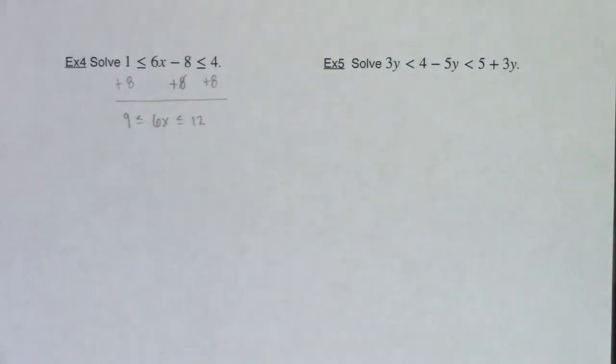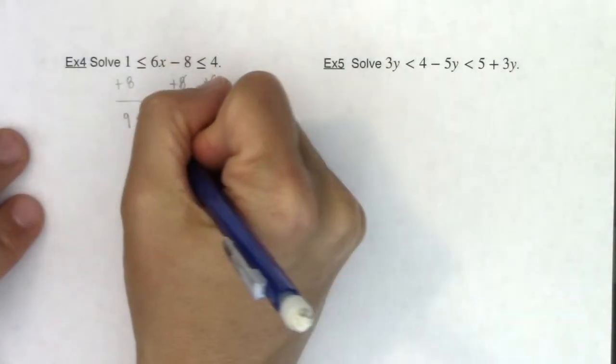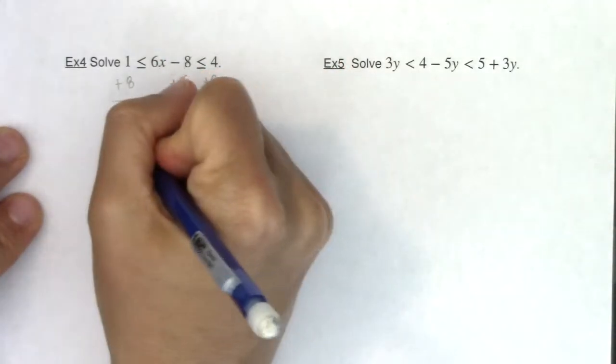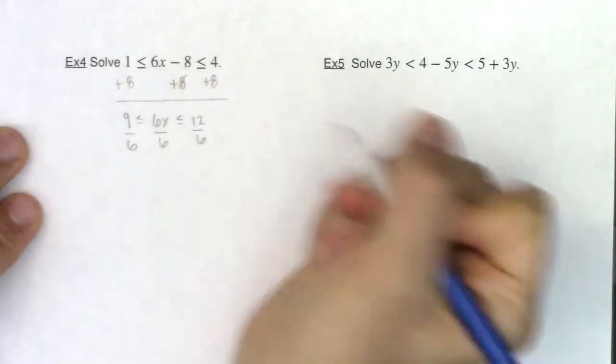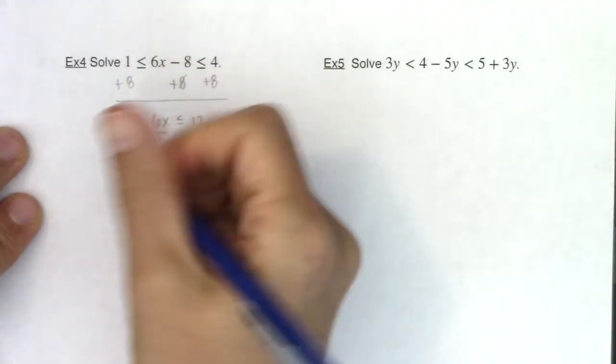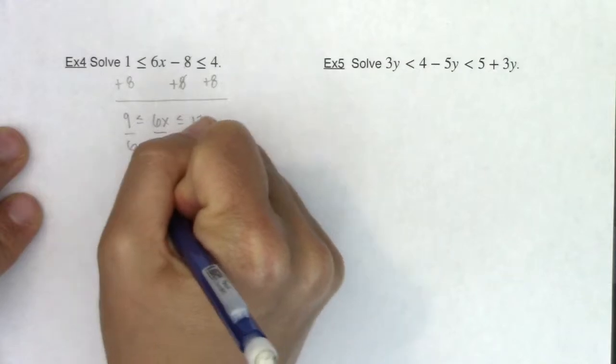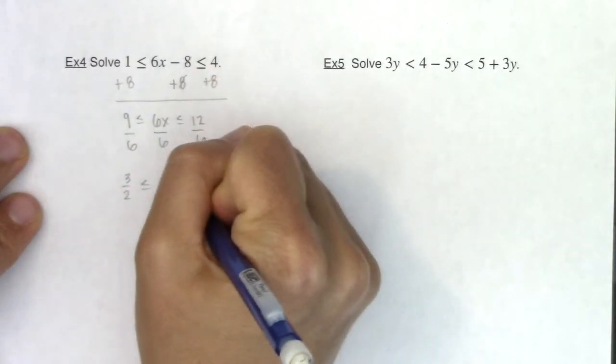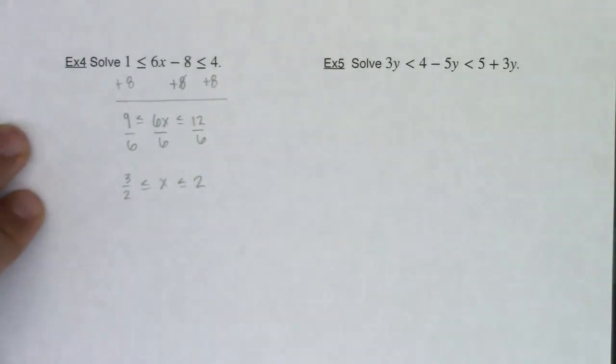Okay, great. Then all I need to do to isolate x is to divide by six. So we'll divide not just left and right by six, but now we're doing left, middle, and right by six. Now nine sixths is the fraction three halves. Six x over six is x, and 12 over six is two. There's my inequality.